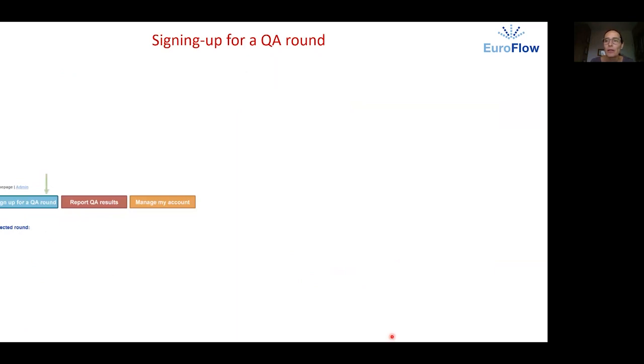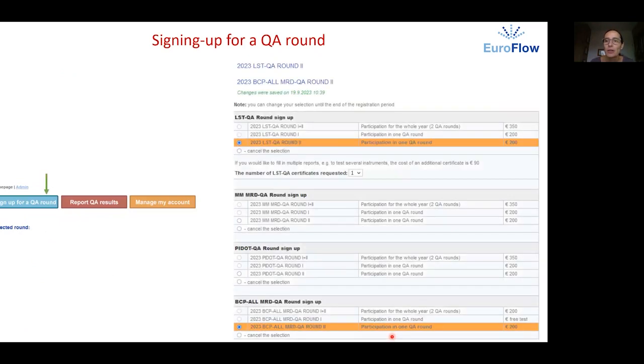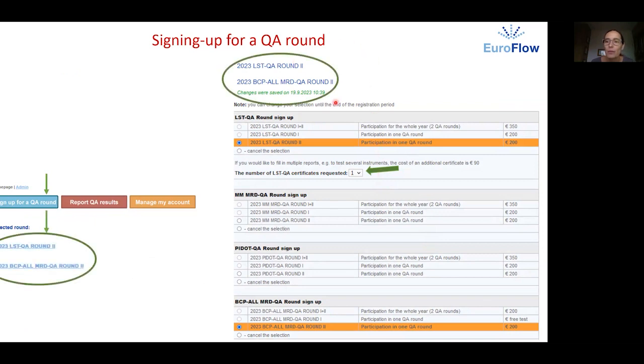When you click on it, it will take you to a page where you can mark the round of your choice. LSTQA is the only scheme which allows more than one report for an additional fee of 90 euros. You can see the rounds which you have signed up for here at the top of the sign up page and also at the top of your home page.